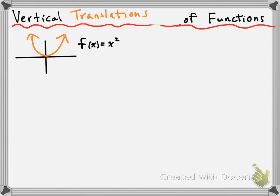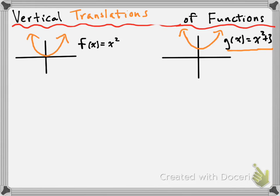If we're talking about vertical translations of this parabola, we might end up with something like g of x is equal to x squared plus 3. Notice that these two parabolas look exactly alike. The only difference is that g of x has been moved up by 3 units. That plus 3 implies that we've moved up the parabola 3 units — we've increased all the y values of all our points by 3, which moves the parabola up 3 units.